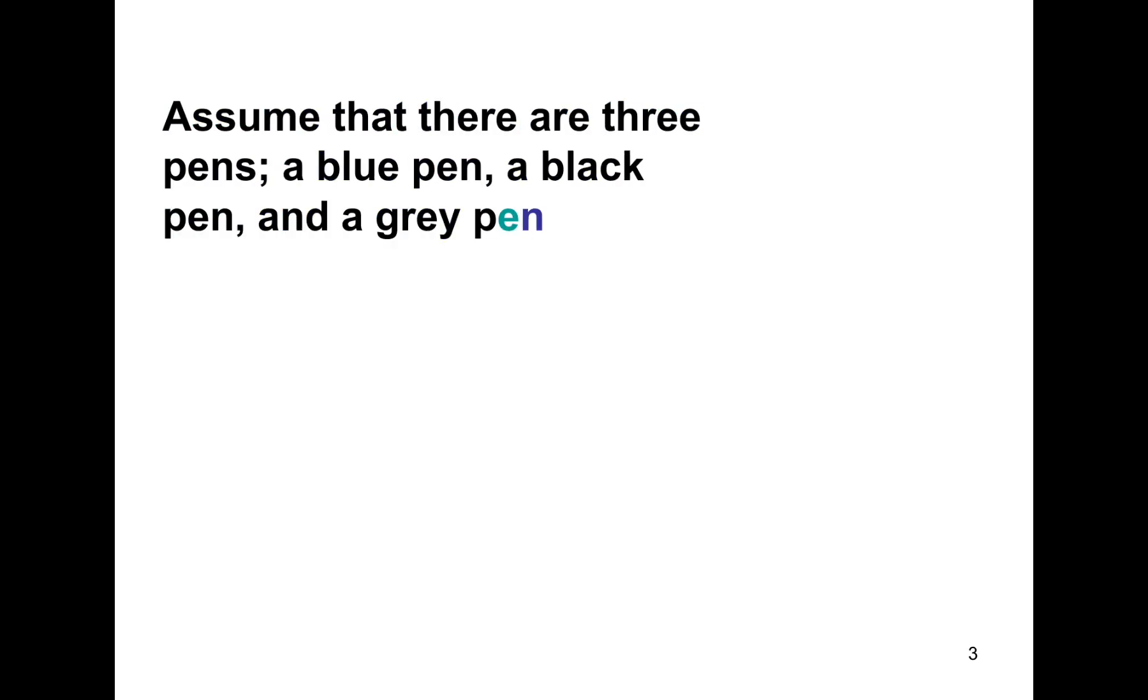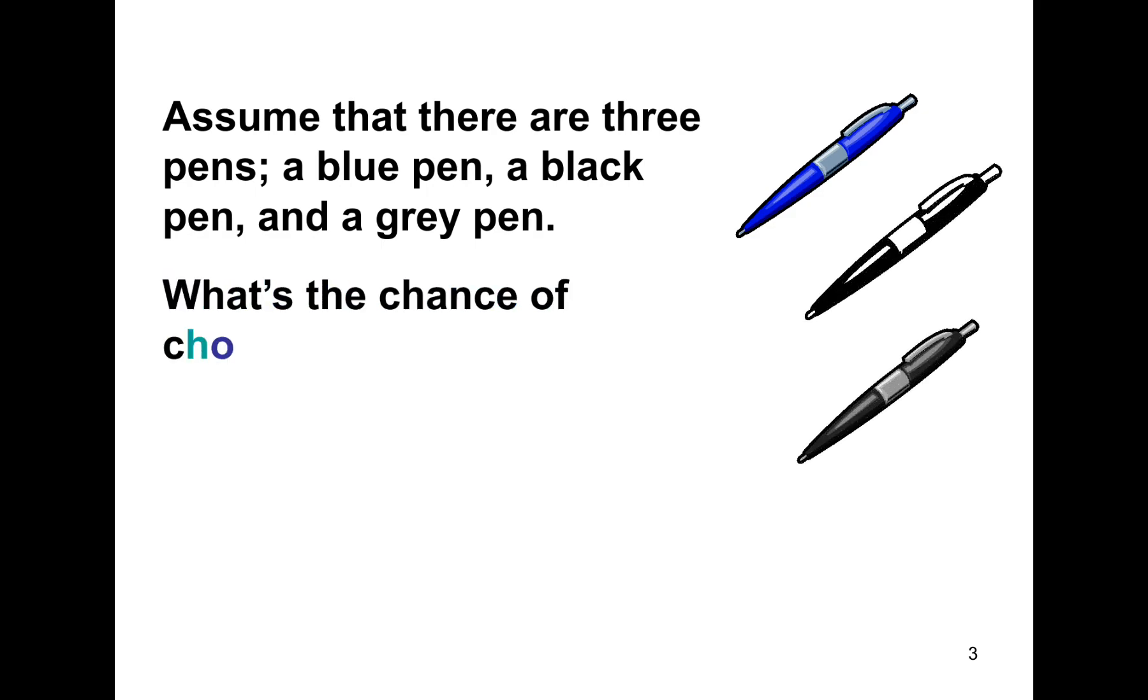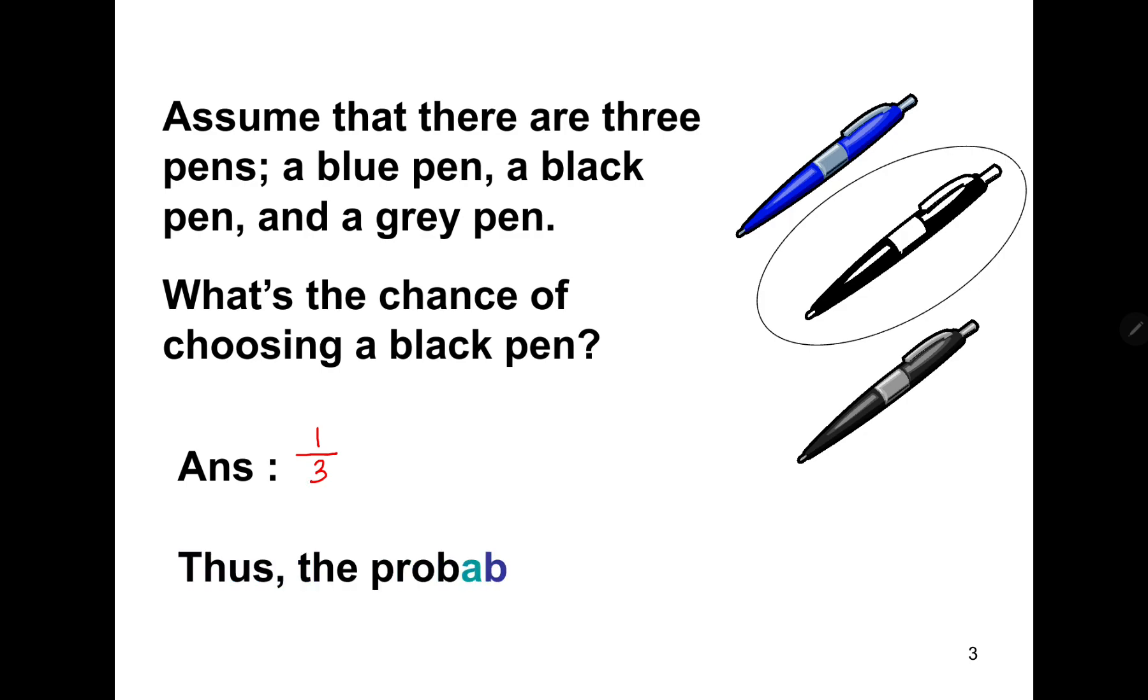For our introduction, let's assume that there are 3 pens, a blue pen, a black pen, and a grey pen. What's the chance of choosing a black pen? So we may say that we have 1 pen out of 3 pens overall. Thus, the probability of choosing a black pen is 1 third.